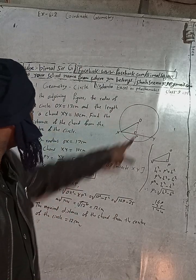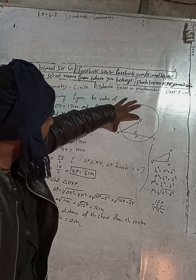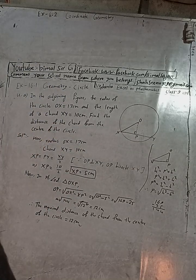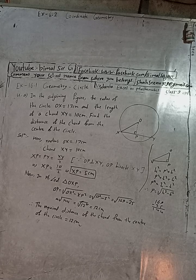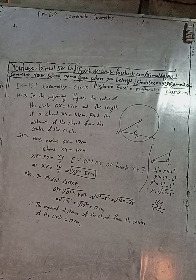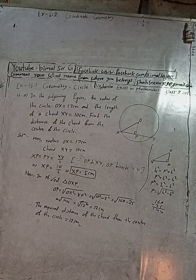OP equals the square root of hypotenuse squared minus XP squared. Hope you understood. If you have any doubts, please feel free to comment in the comment box and I will try my best to clear your doubts. In coming videos I will explain more. My target is to complete the class 10 Vedanta books, so I am not discussing much more than necessary.